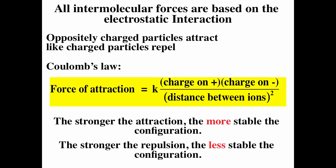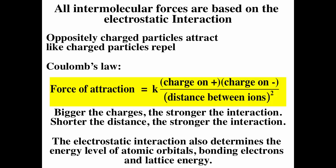All intermolecular forces are electrostatic in origin, so they follow Coulomb's law. Coulomb's law says the force of attraction equals a constant K times the charge on particle one times the charge of particle two, divided by the distance between the particles squared. The bigger the charges, the stronger the interaction — we treat +2 and -2 the same way in terms of absolute value. The shorter the distance, the stronger the interaction. Electrostatic interaction determines the energy of atomic orbitals, bonding, and lattice energy.